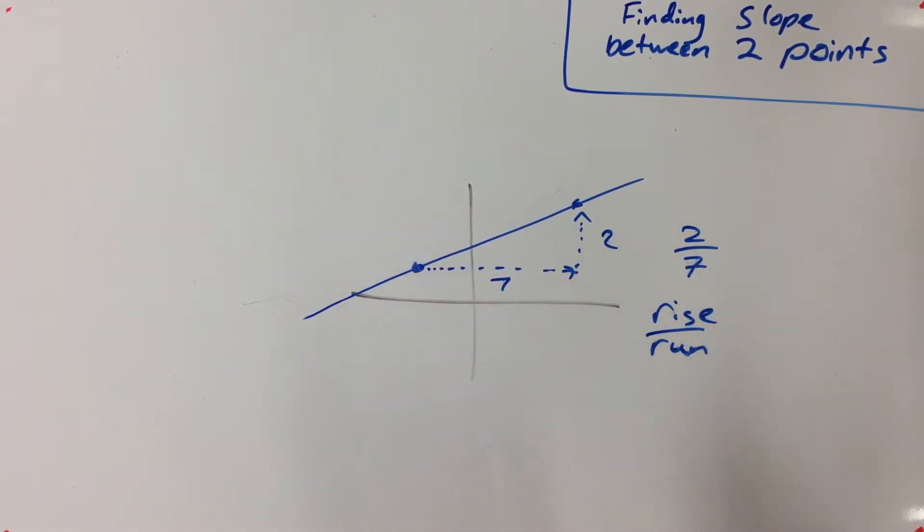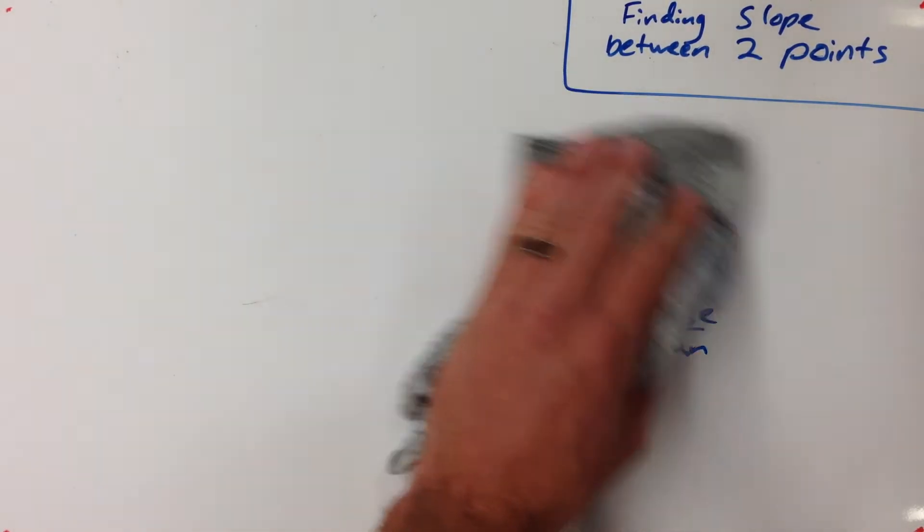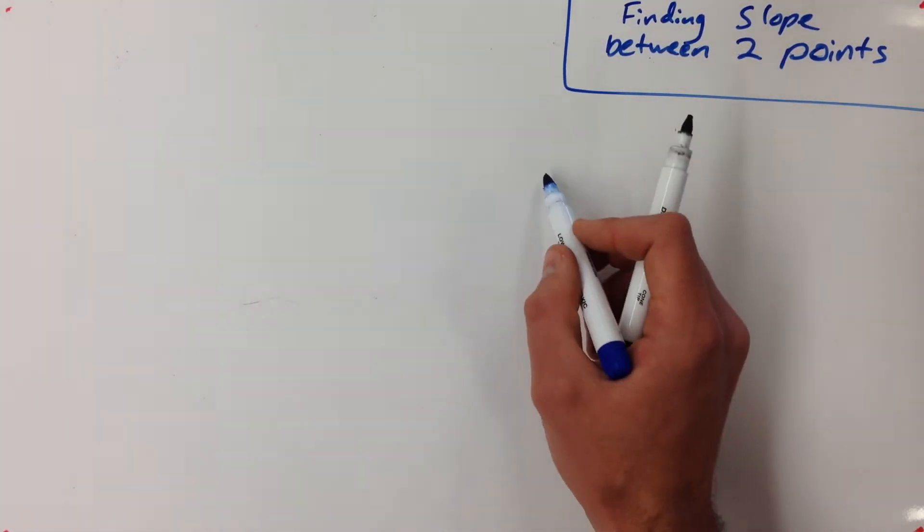This works really good if we have a graph already but if the numbers get really big or complex like the real world tends to get, we're going to have to find a better way of doing it. So let's take a look at an example.